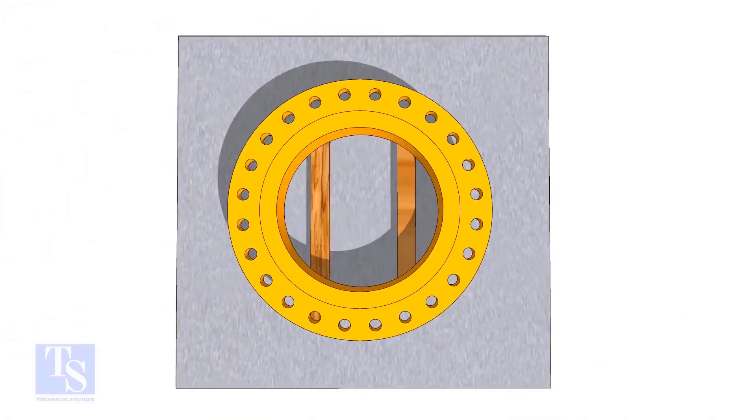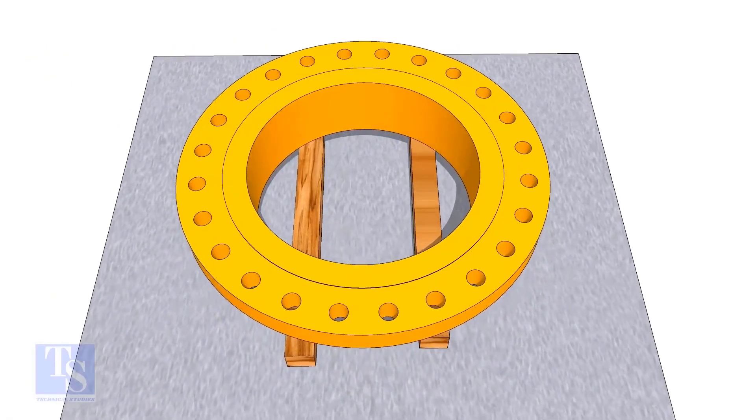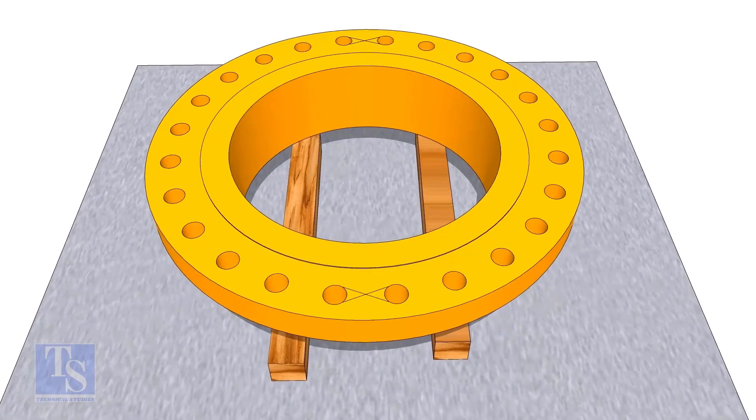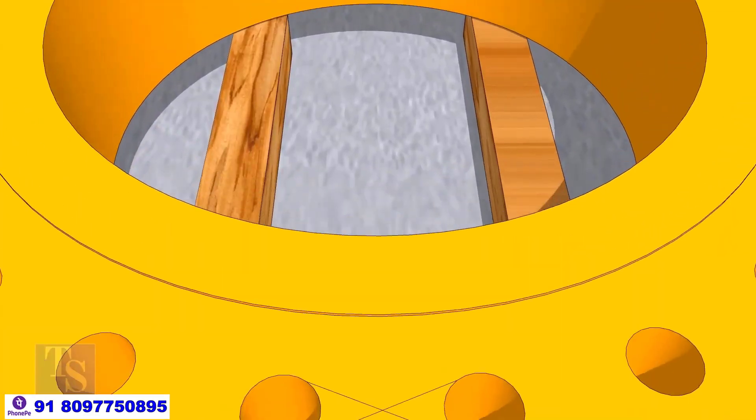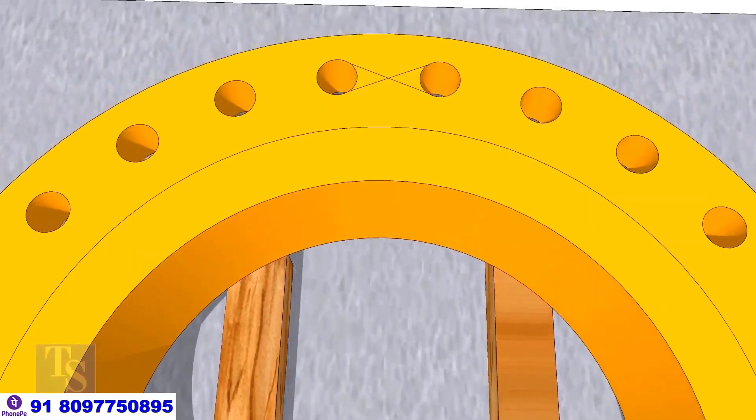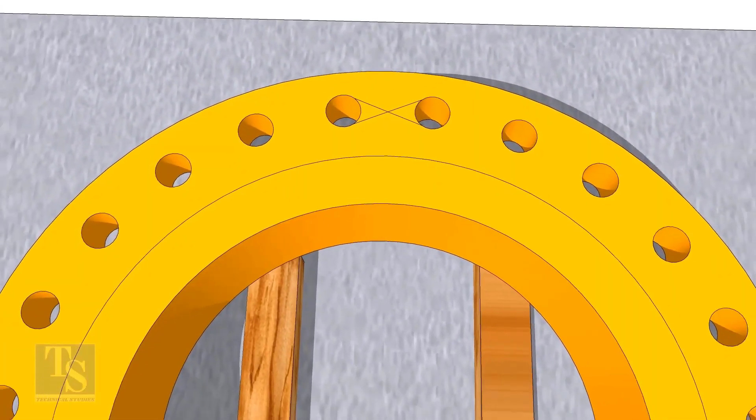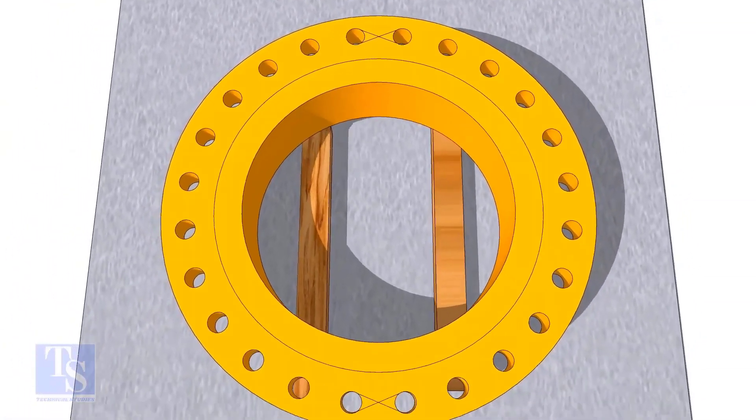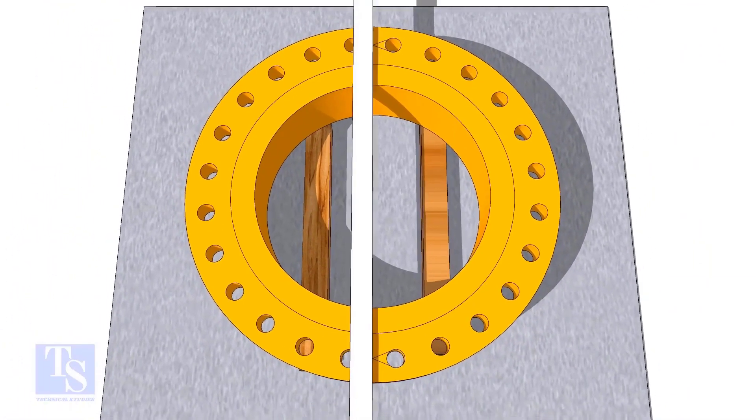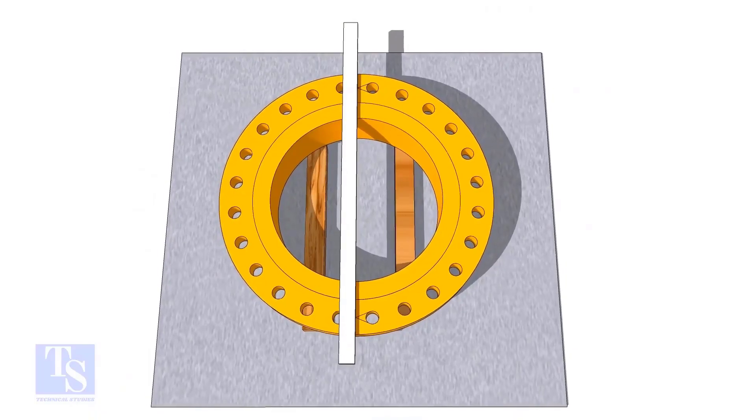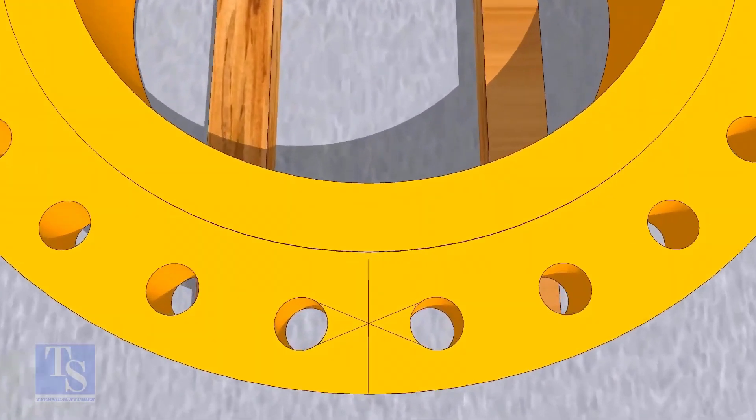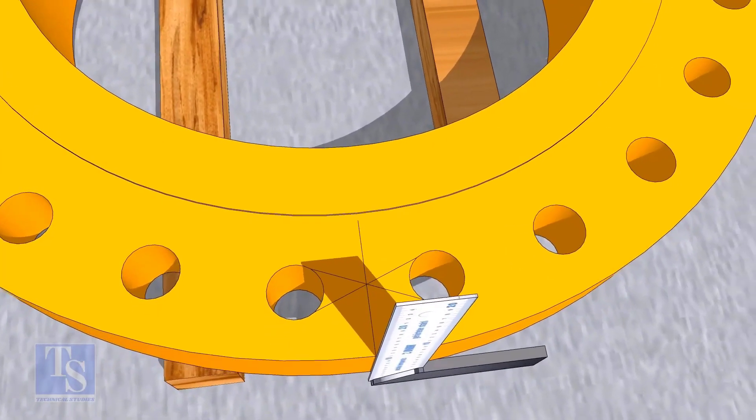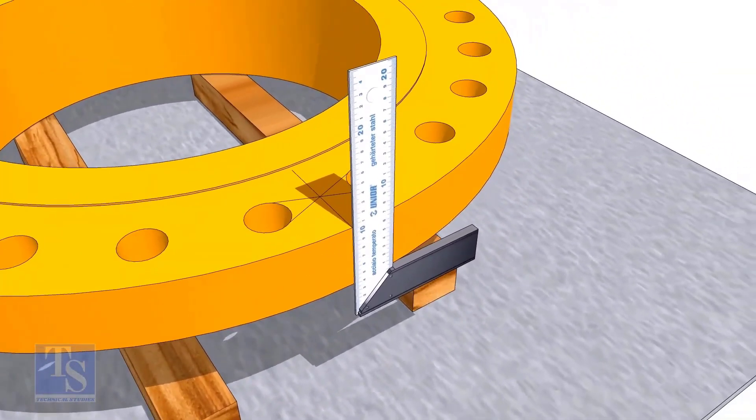In the second method, you need to mark the center line of the flange. Draw tangential lines on two adjacent holes on opposite sides. Draw a line as shown. Transfer the center line to the side of the flange.